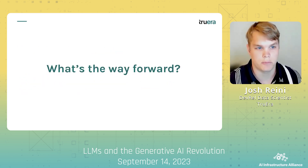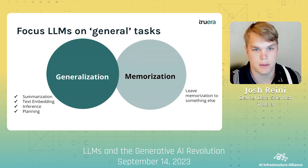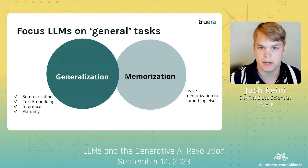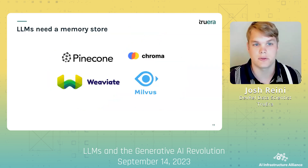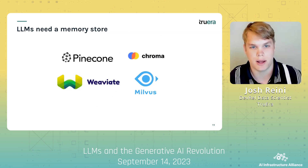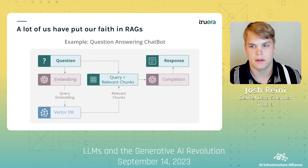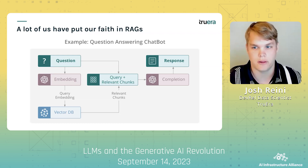But how do we go forward from here? We should allow LLMs to focus on general tasks — tasks like summarization, embedding generation, inference, and planning — and we should leave the memorization to something else. Vector stores are a great way to provide our applications with a memory while letting the models do what they're best at. In doing so, a lot of us have turned to RAGs, or retrieval augmented question answering, as a solution to the hallucination problem.